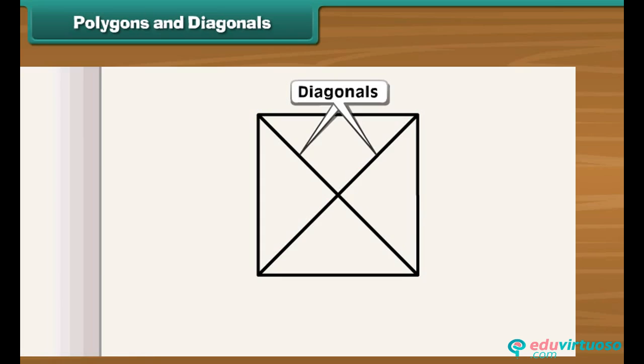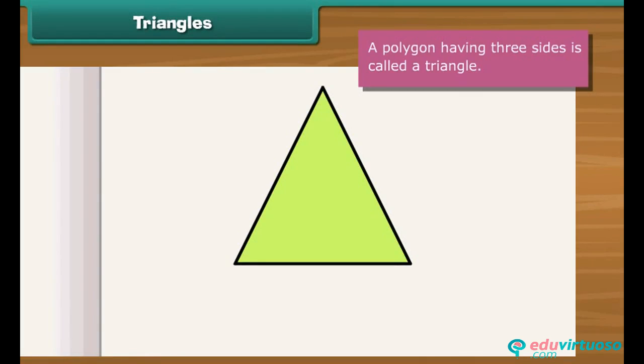A polygon having three sides is called a triangle. It has three vertices and three angles. Triangle is denoted by the given symbol. This is triangle ABC. It can also be named as triangle BCA or triangle CAB.